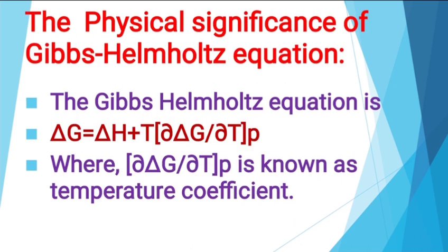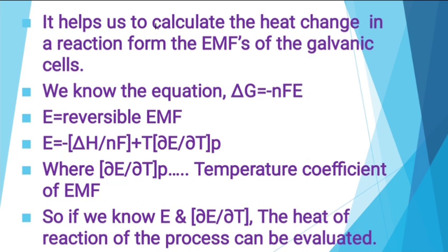Our next point is the physical significance of the Gibbs-Helmholtz equation. The Gibbs-Helmholtz equation, seen in the last lecture, is: delta G is equal to delta H plus T times the partial derivative of delta G with respect to T at constant pressure. Here delta G represents the change in Gibbs free energy, delta H is the change in enthalpy, and the term delta G divided by delta T is known as the temperature coefficient. From this equation we can calculate the heat change in a reaction for galvanic cells when we know the EMF.